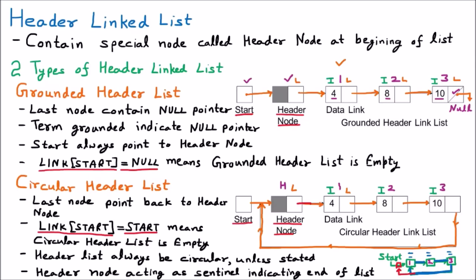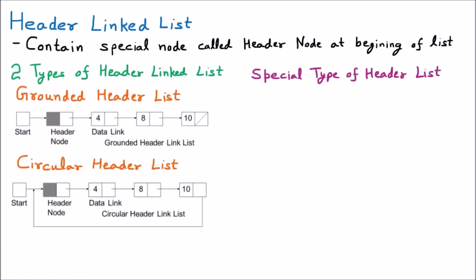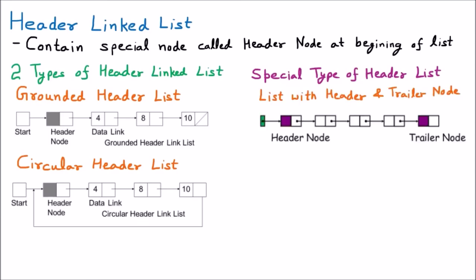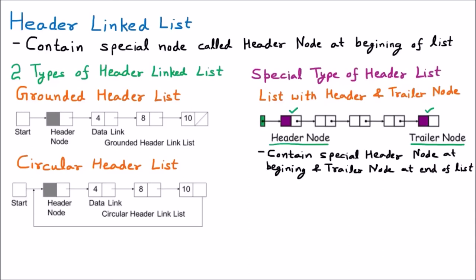Now we are discussing the special type of header link list, which is the list that contains both a header and a trailer node. In this list, we have a header node at the beginning and a trailer node at the end. When both nodes are present, this is called the special type of list containing header and trailer, so we can say this list contains a special header node at the beginning and a trailer node at the end.